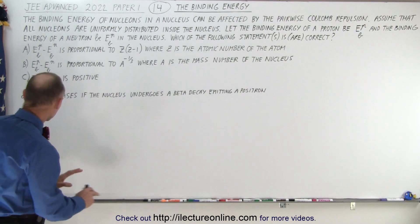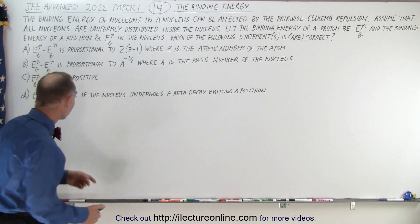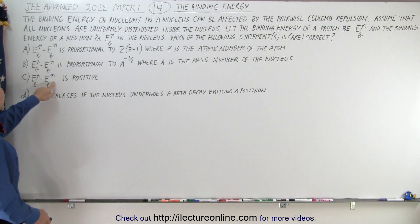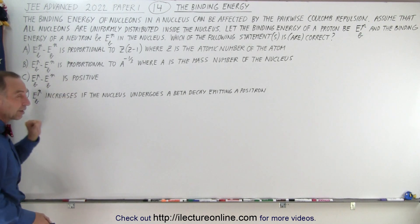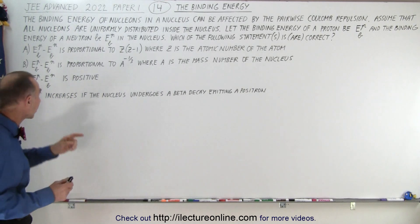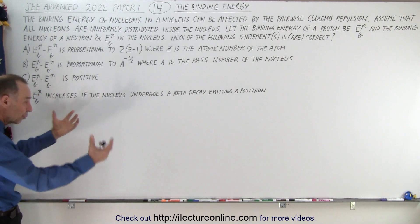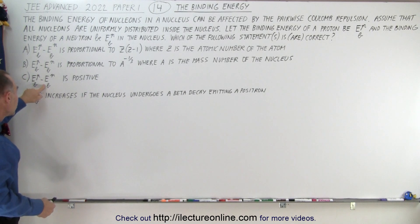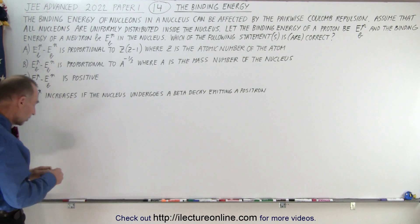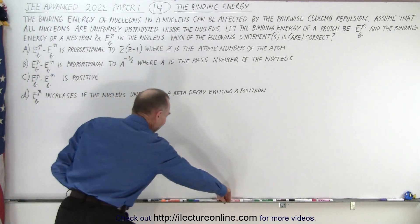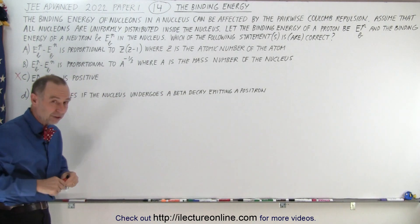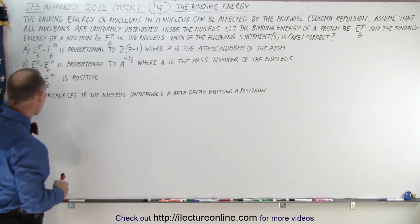B, C, and D are the easier ones to answer, so let's start with those. First, which binding energy is bigger — is the binding energy of a proton bigger than that of a neutron so that the difference is positive? The answer is no, because the binding energy of the protons is reduced by the Coulomb repulsive forces. So the binding energy of neutrons is always going to be bigger than that of the protons, meaning statement C is not correct.